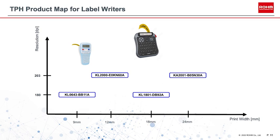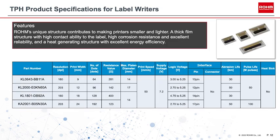Let's transition to thermal print heads for label writers. A label writer is a printer that prints information on adhesive labels and tapes. This product map features very small print widths for mobile applications, with print width on the horizontal axis and print resolution on the vertical axis. Roam's unique structure allows these printers to be made smaller and lighter, with a thick film structure providing excellent adhesion, corrosion resistance, high reliability, and excellent energy efficiency.